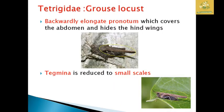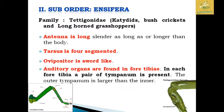The family Tetrigidae mainly comprises grouse locusts. They have a backwardly elongated pronotum that covers the abdomen and hides the hind wings. The tegmina are reduced to small scales in these insects. You can clearly see the elongated pronotum in the images provided.